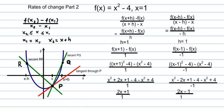Welcome back to rates of change part two. In this video we will be working with a nice example where the function formula is given, so we don't have to fit the data into an equation — it's provided already. The function we will be working with is x squared minus 4, and the point at which the rate needs to be calculated is x equals 1.